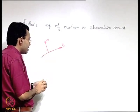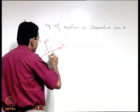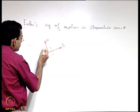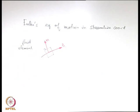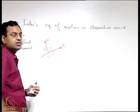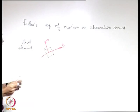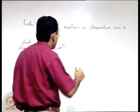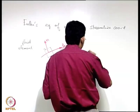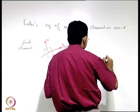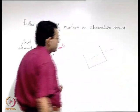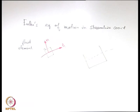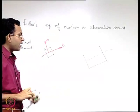In this coordinate system, we consider a small fluid element that is coaxial with the streamline at a given location. We separately draw it for clarity and identify all the forces acting on this fluid element.